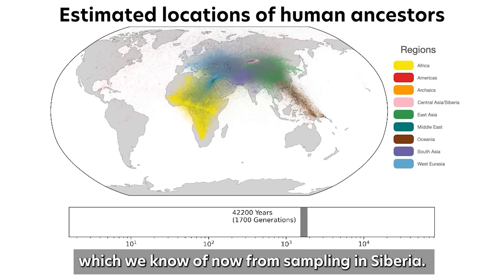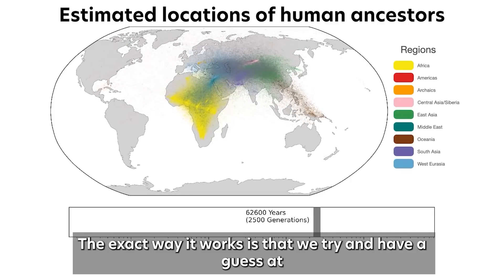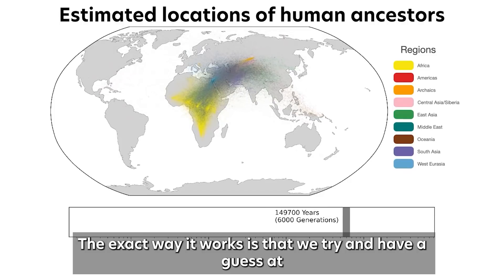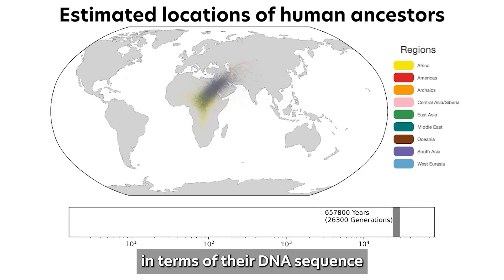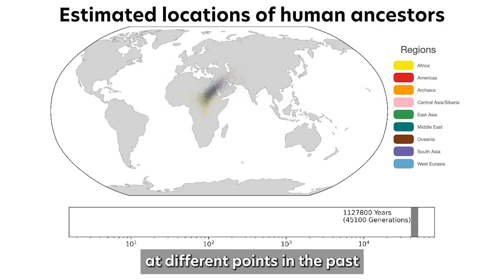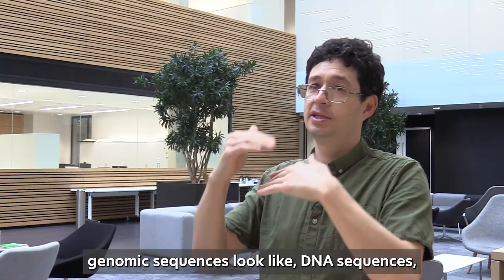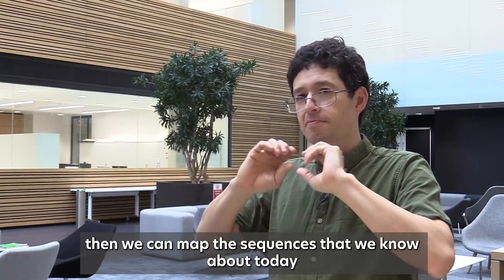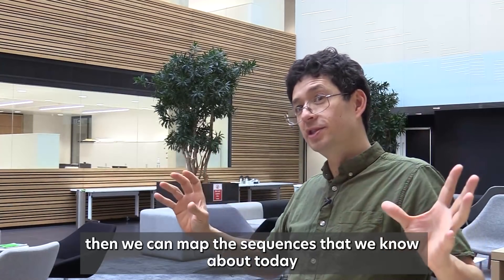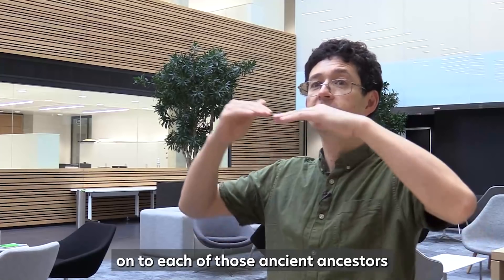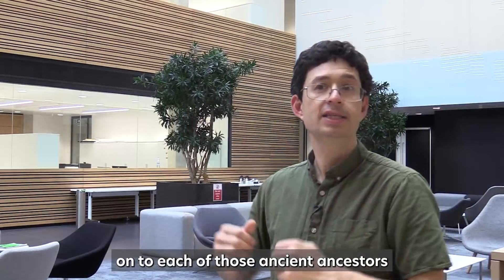The exact way it works is that we try to have a guess at what the genetic ancestors of different sets of people looked like, in terms of their DNA sequence, at different points in the past. And then once we've estimated what those DNA sequences look like, we can map the sequences we know about today onto each of those ancient ancestors.